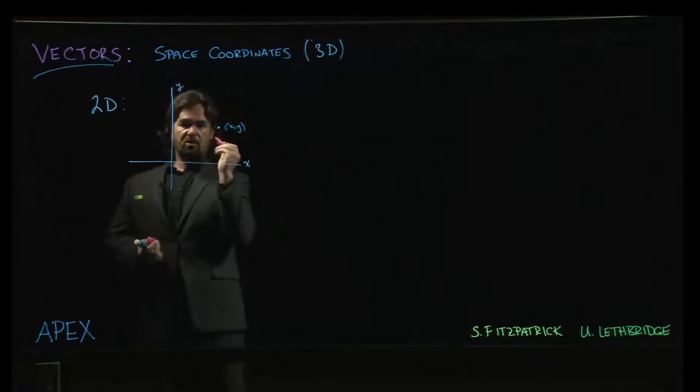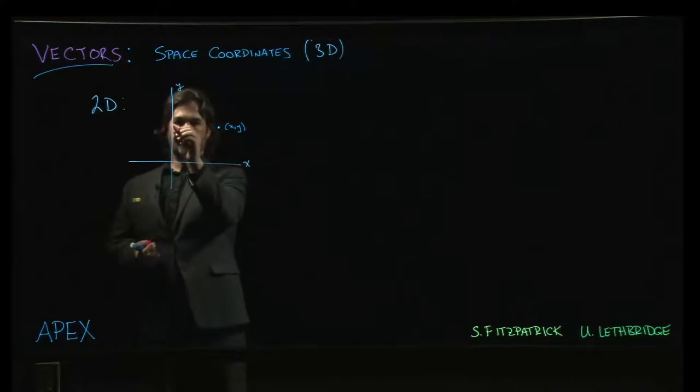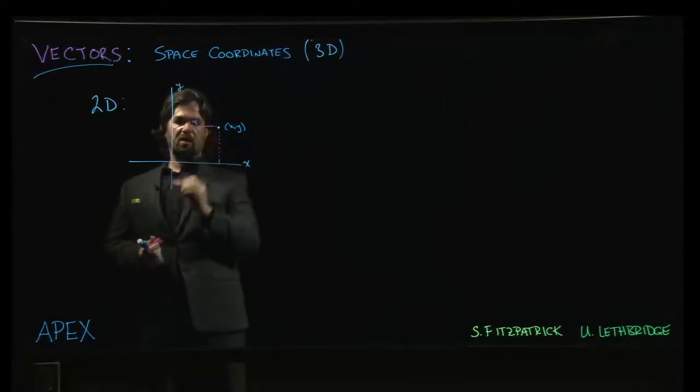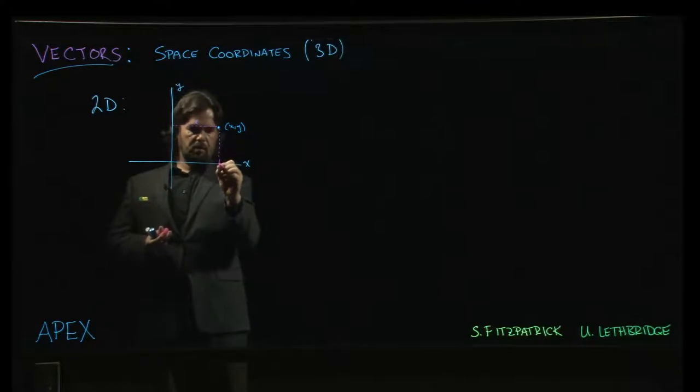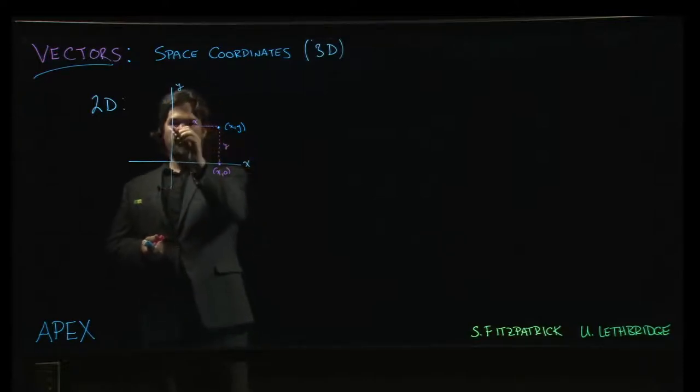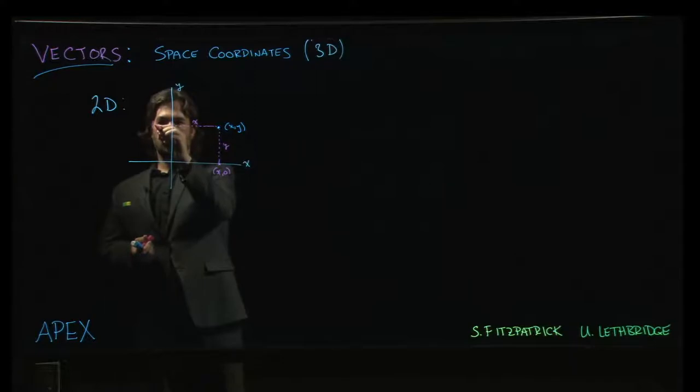Well, they measure the distances between that point and the two coordinate axes. The length of this side is x, so this point down here is x, 0. And the length of this side is y. So this point here has coordinates 0 and y.